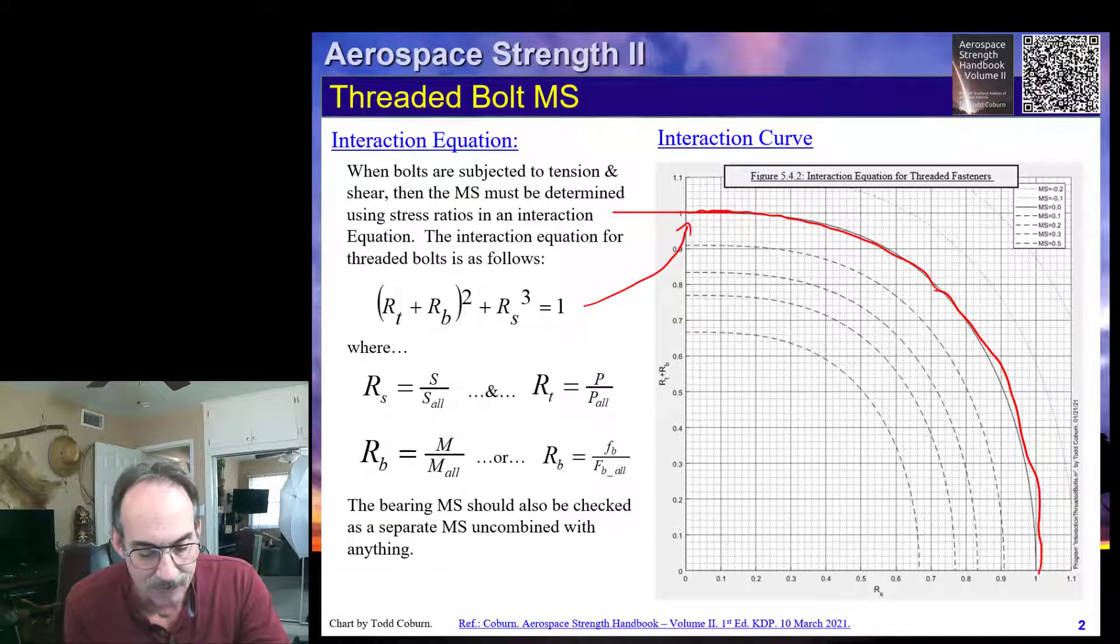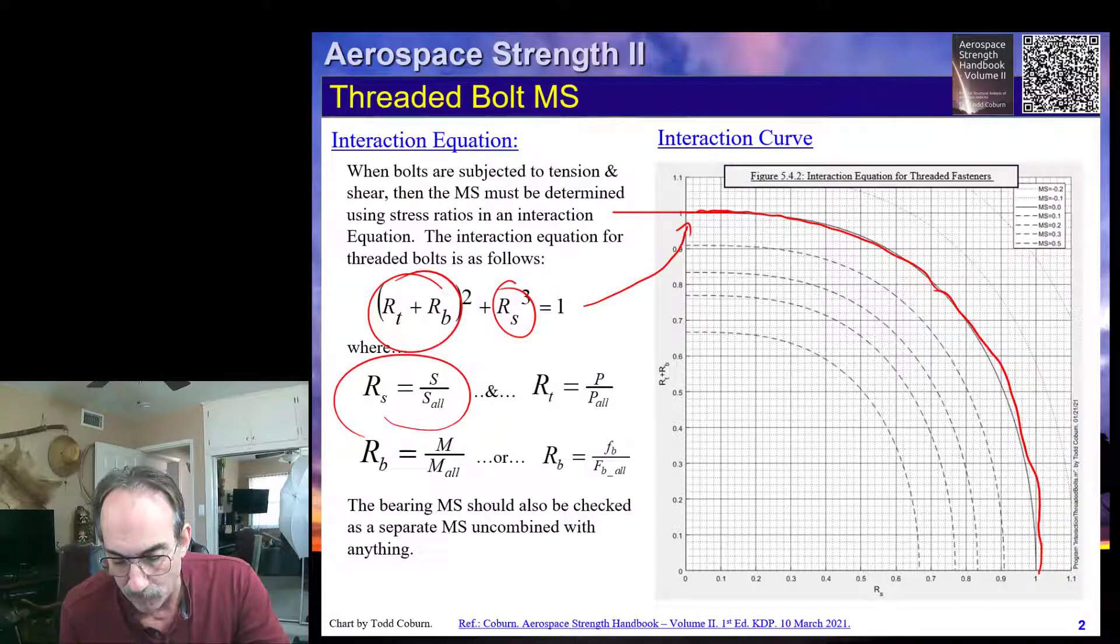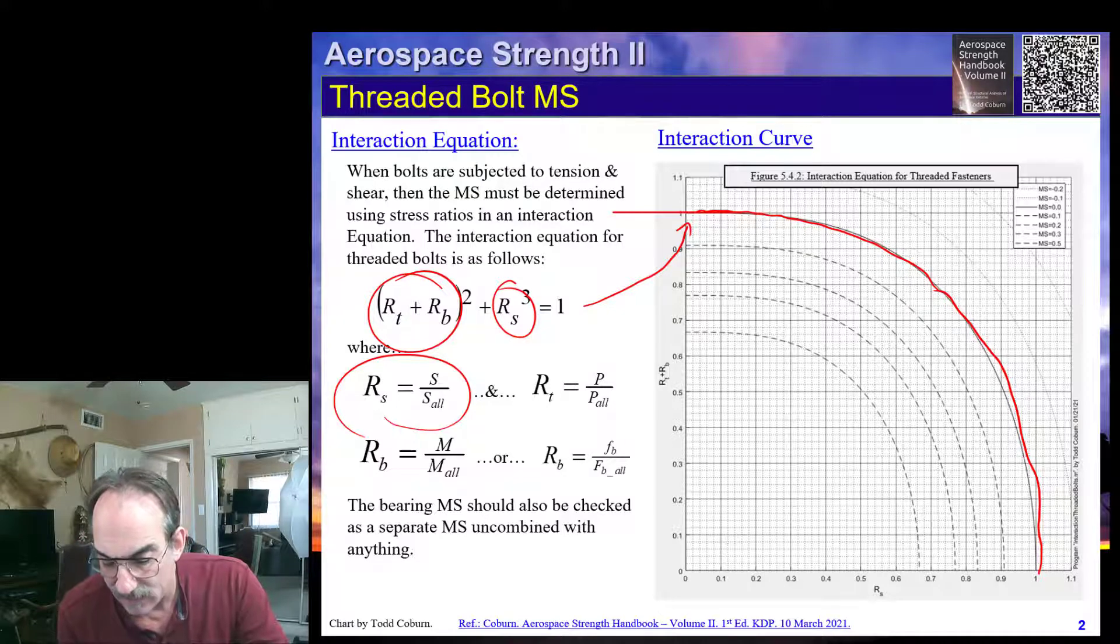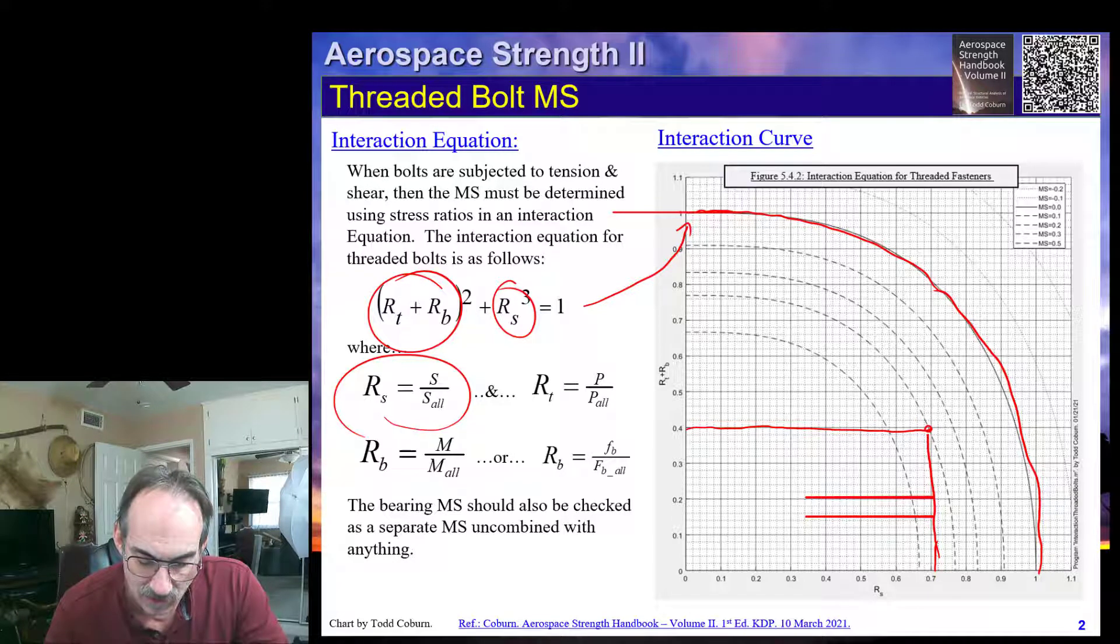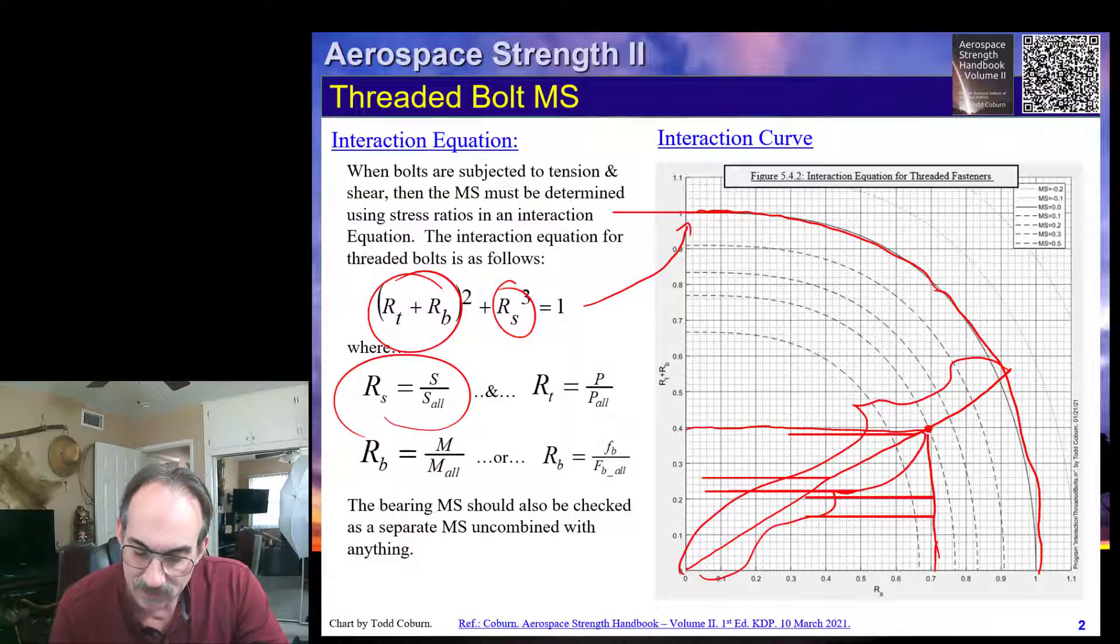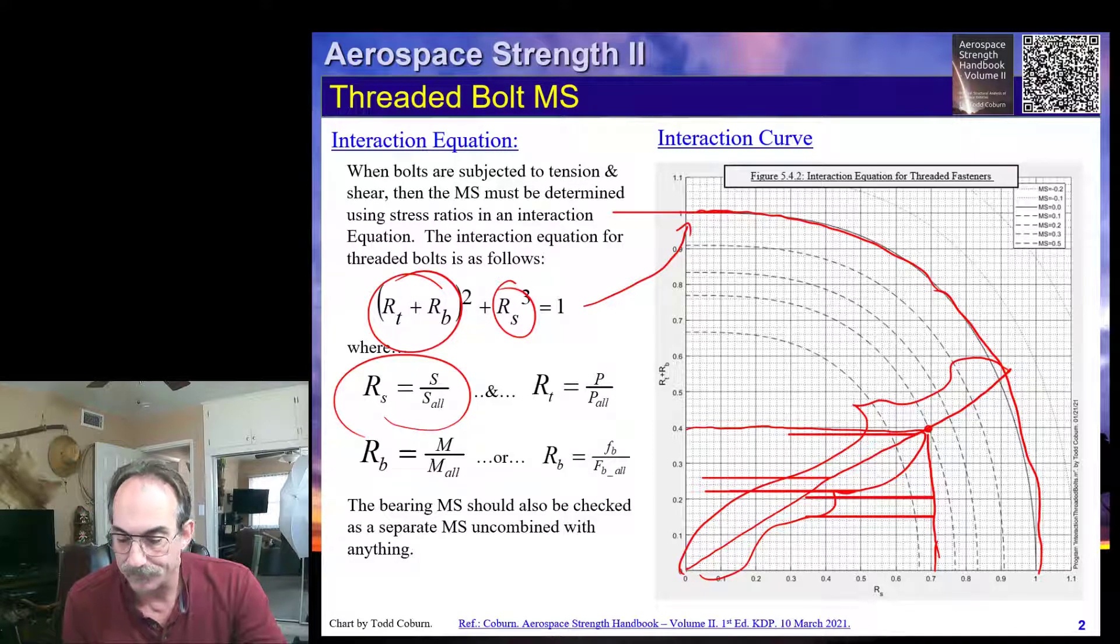So we come up here with RS. Let's say it's right here. Let's say our RS is 0.7. So we're going to plot that here. Let's say our RT plus RB is 0.4. Now the way to write your margin of safety, as we saw in chapter 12.6 of the first volume, we draw a line through here, and then we take this length divided by this length minus one.